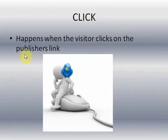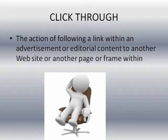A click is basically what happens when the visitor clicks on your link — the publisher's link — and that's how clicks are measured. Click through: this is basically what happens when they click on your link for your advertisement or whatever the content is, and then they go to another website, a page, or even an iframe. You're getting a click through every time they go to that link.